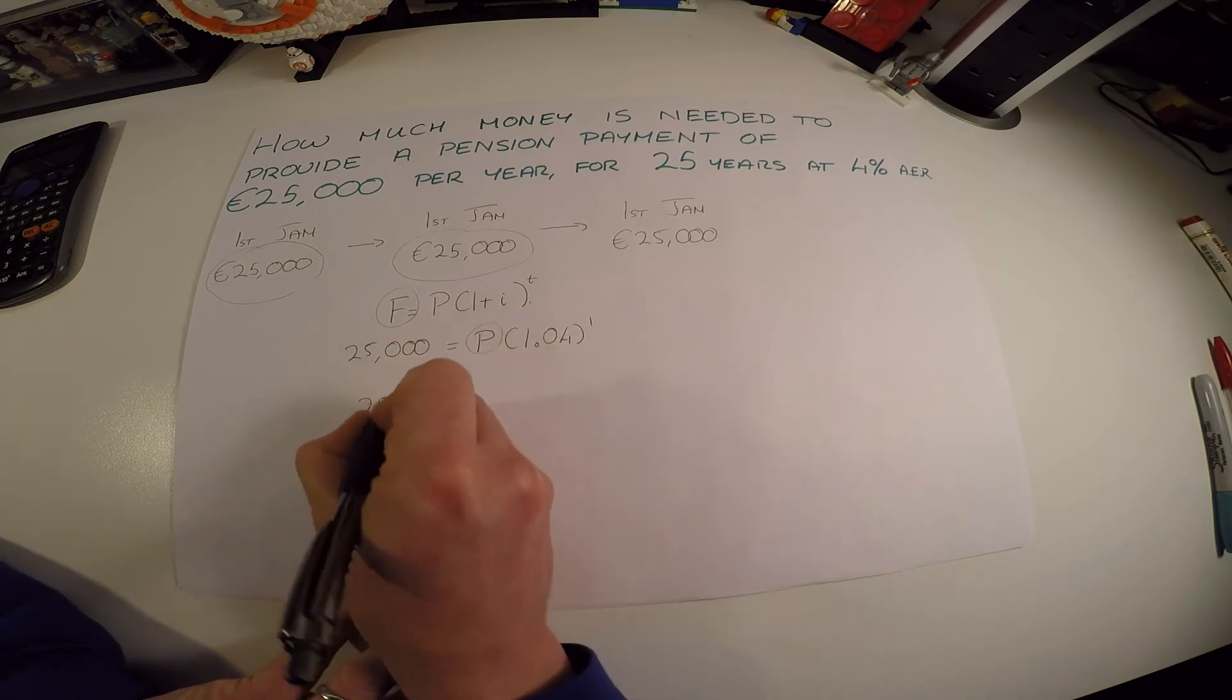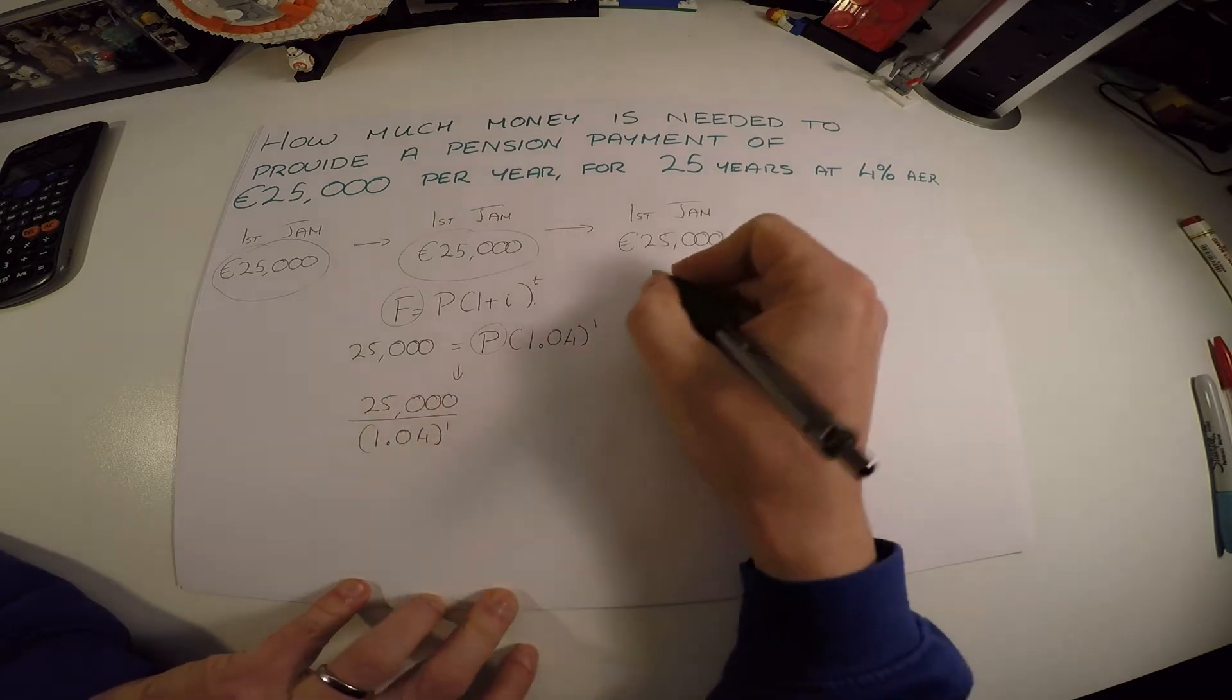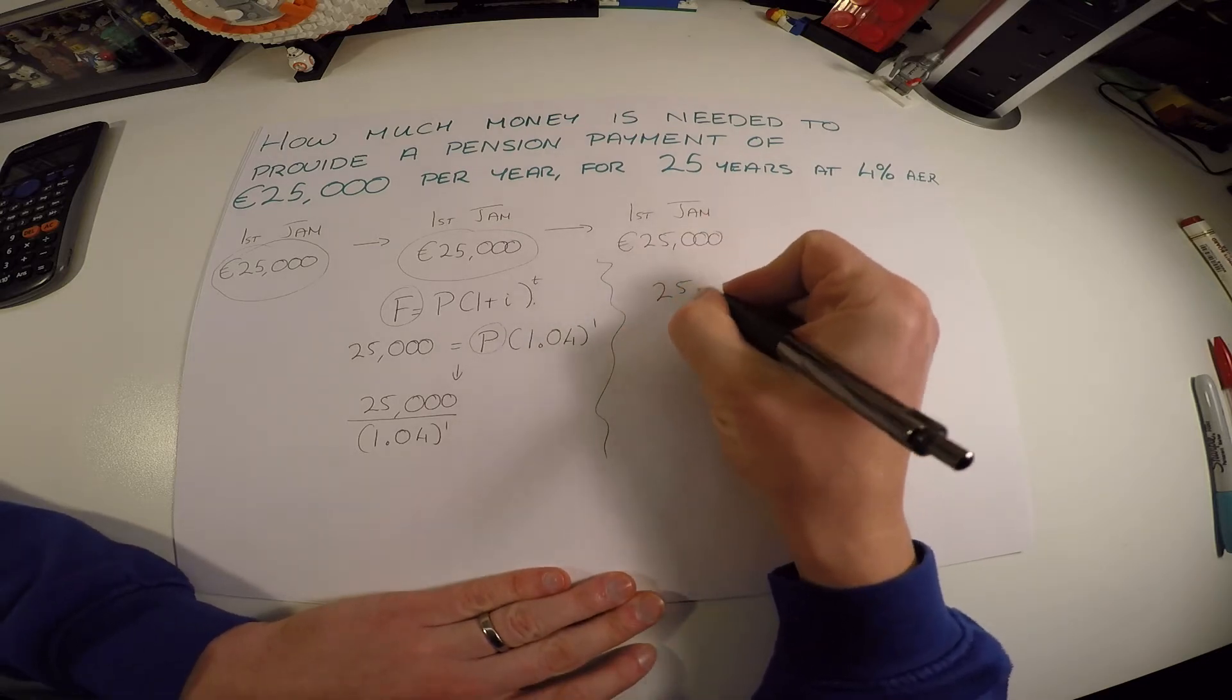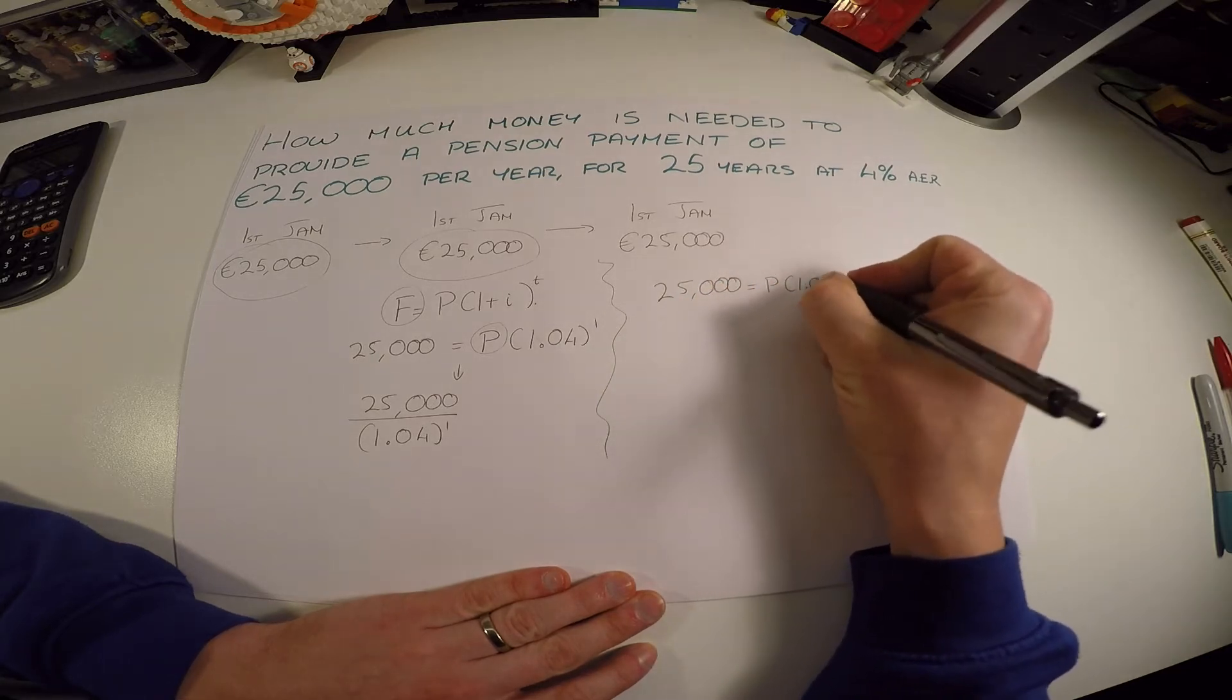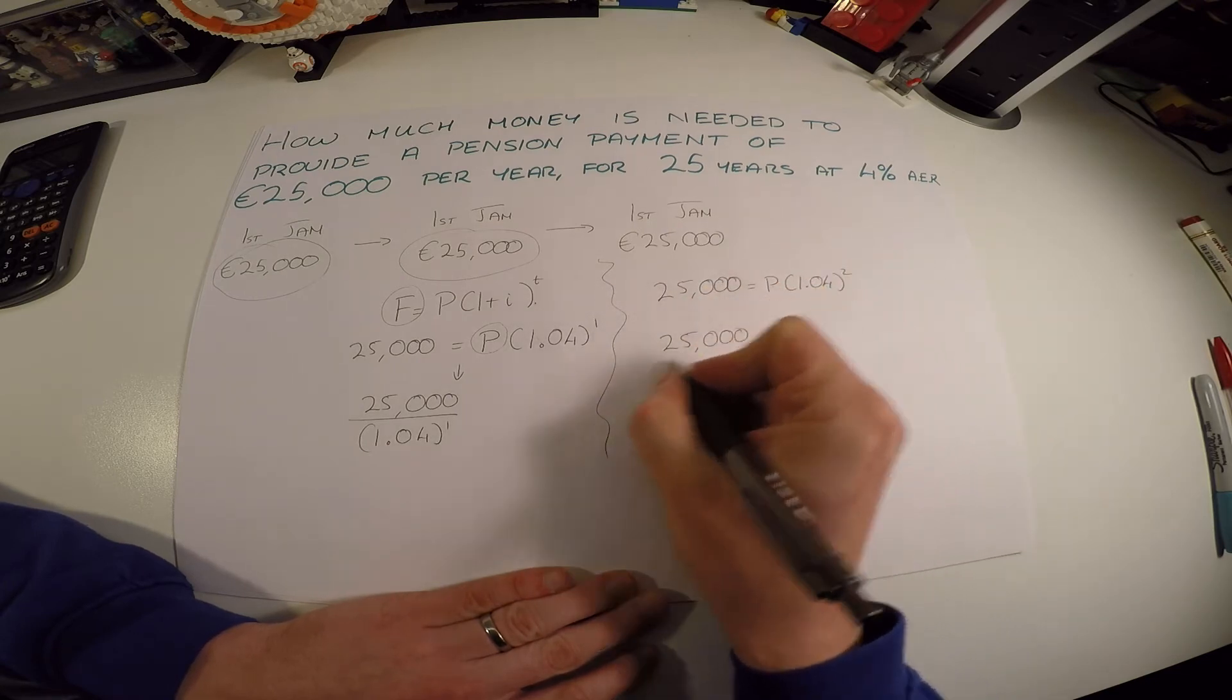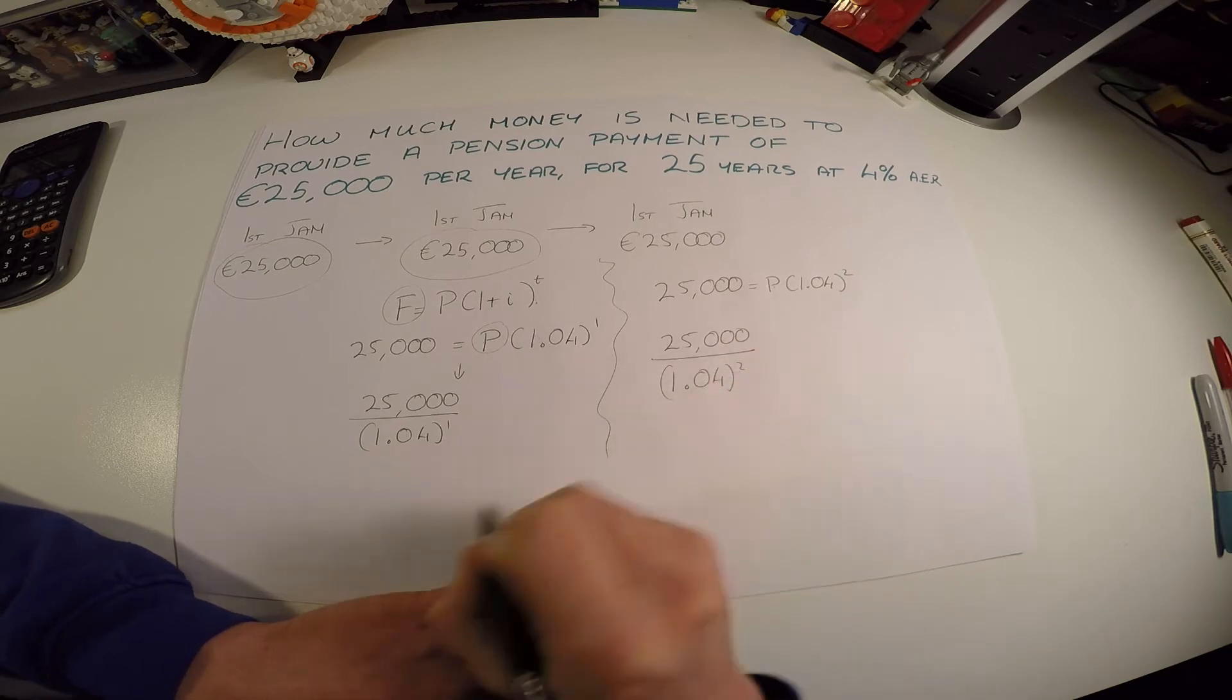And what about the next piece of money or the next packet? Well, this is also going to have a final value of 25,000, but that's going to be in there waiting for me for two years. So the present value now I need to put in to ensure I have 25,000 in two years is going to rearrange to this: 25,000 over 1.04 squared.